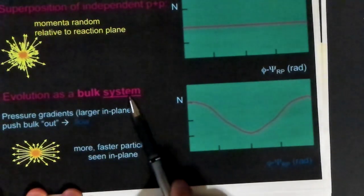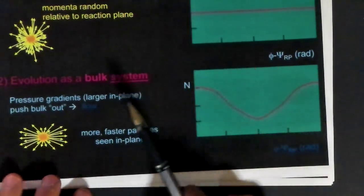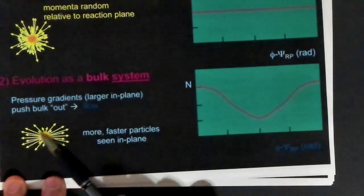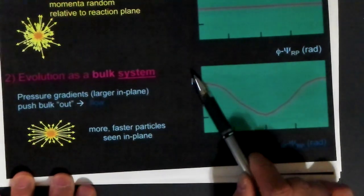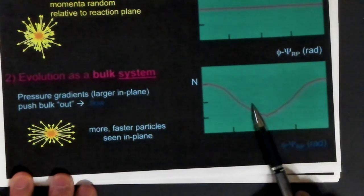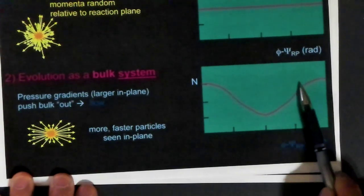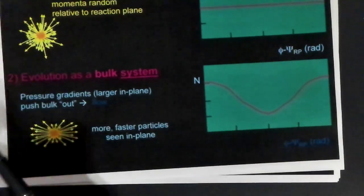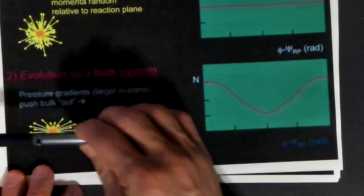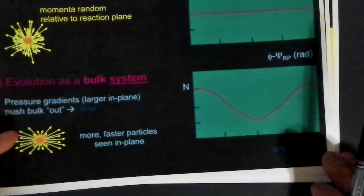If I have a hydrodynamic system acting like a bulk material, like a liquid, then I would expect to see a maximum along the reaction plane, phi equals zero, and then I would have a minimum at phi equal to 90, or pi over two, and then back up to a maximum when I'm looking over here again, at phi equals pi, or 180 degrees.